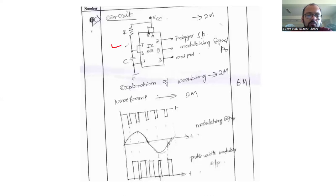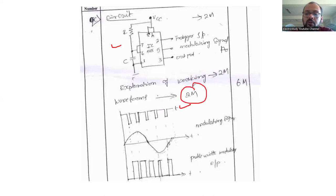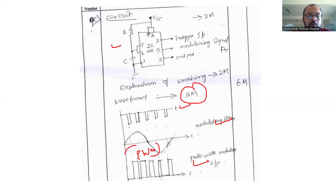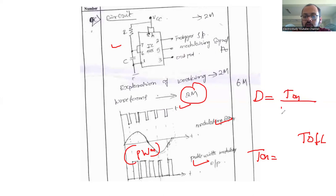The 555 timer IC is the most popularly used analog IC in all types of electronic circuits. Mention the VCC output and triggering. The RC value is most important. Also draw the waveform — it carries a weightage of two marks. Mention the modulating signal and the superimposing. By comparing this signal, you get the PWM output. You can adjust T-on time and T-off time, and thus the total duty cycle, which equals T-on divided by (T-on + T-off). This is one of the most important techniques in analog electronics for generating PWM.